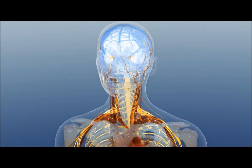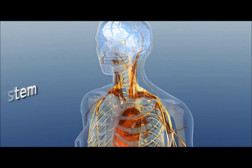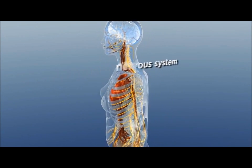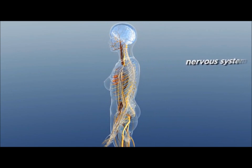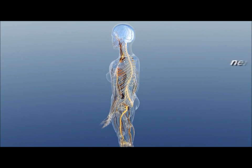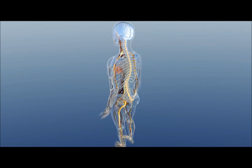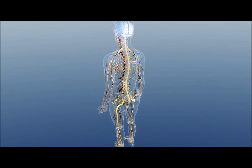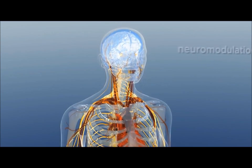The nervous system is nature's information superhighway. It controls end-organ function by modulating activities such as molecular release and muscle tone. Over the last three hundred years, our understanding of the nervous system has grown immensely. Yet our ability to influence it and treat disease remains limited.